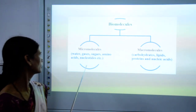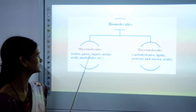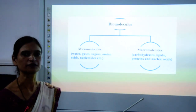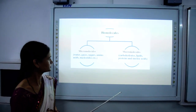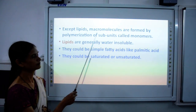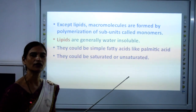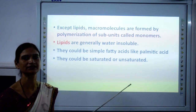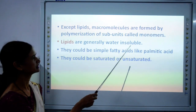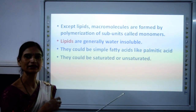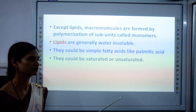If we take a living tissue, extract it, and filter it, the filtrate will contain micromolecules such as water, gases, sugar, amino acids, and nucleotides. Macromolecules are of bigger size — they will not pass through the filter. Lipids are an exception: they are present in the cell membrane structure and are actually micromolecules, but they cannot pass through the filter, so they remain categorized as macromolecules.